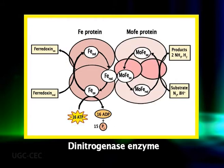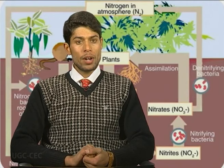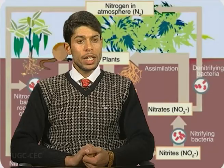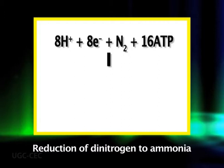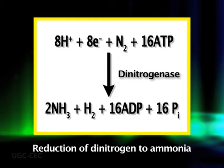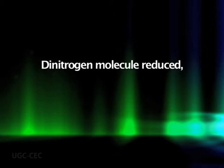The larger protein in the dinitrogenase complex is called the molybdenum-iron protein. It is a tetramer consisting of two pairs of identical subunits with a total molecular mass of 220 kilodaltons. Each molybdenum-iron protein contains two molybdenum ions in the form of an iron-molybdenum-sulfur cofactor. The overall reaction converts dinitrogen into ammonia with the help of ATP. Note that for every dinitrogen molecule reduced, one molecule of hydrogen is generated.